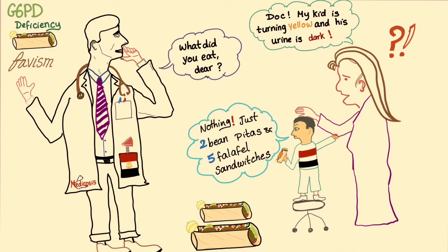This is a doctor in Egypt, and there's a mother who is terrified. She says: 'Doc, my kid is turning yellow and his urine is dark.' So the smart doctor asks, 'What did you eat, my dear son?' The child replies, 'Nothing — just two bean pitas and five falafel sandwiches.' This is a typical Egyptian scenario.